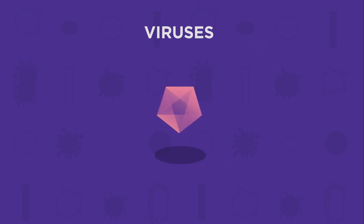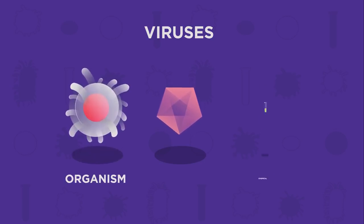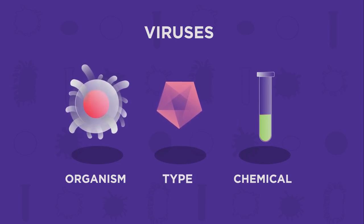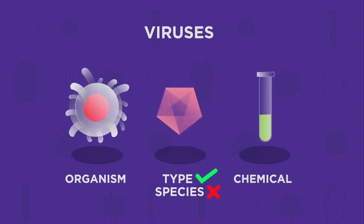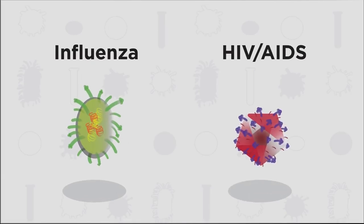As we just saw, viruses aren't made up of cells. In fact, they aren't really living. They are halfway between a living organism and a chemical. Because they aren't living, we say there are different types of virus rather than different species of virus. Some common types of viruses are influenza and HIV or AIDS.